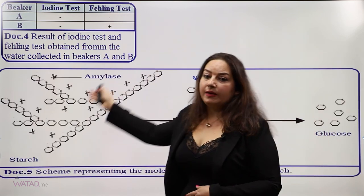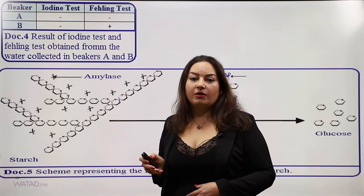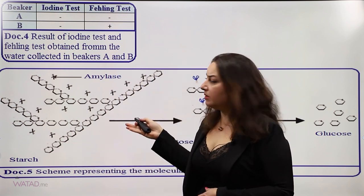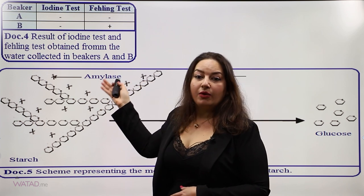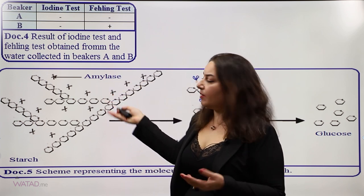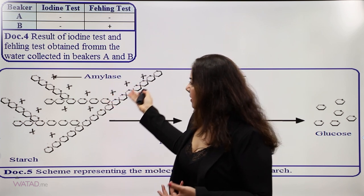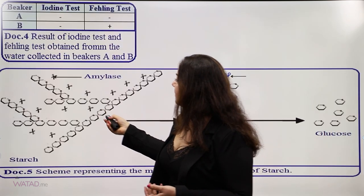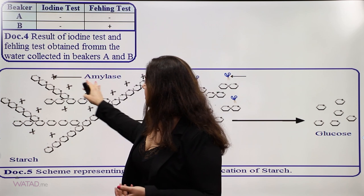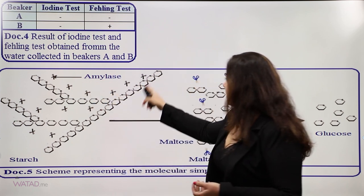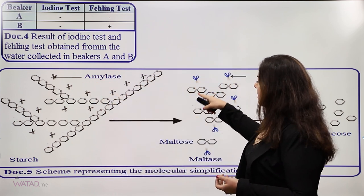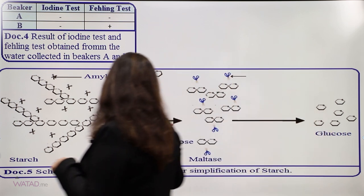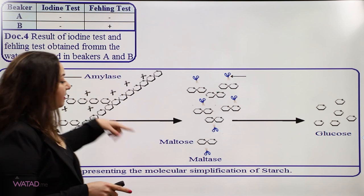Now we will examine the molecular simplification of starch in detail. Starting with the starch molecule, also called amylose, which is a type of polysaccharide. The enzyme amylase acts on starch and changes it into a simpler molecule called maltose, which is a disaccharide.